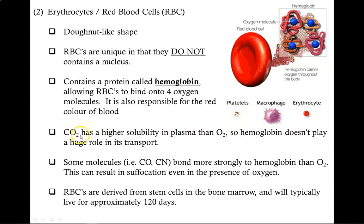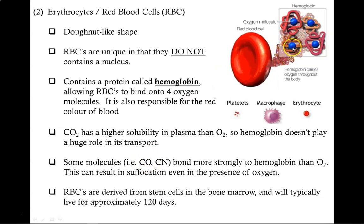It is these iron atoms in the hemoglobin that give blood its red color. Because oxygen doesn't dissolve very well in blood plasma, it requires hemoglobin in order to be transported around the body. Carbon dioxide, however, is a lot more soluble in blood plasma, so hemoglobin is not required to carry the CO2. Some molecules like carbon monoxide and cyanide bond more strongly to the hemoglobin than oxygen, and that's why these substances are poisonous to us. Carbon monoxide poisoning occurs when it bonds onto the hemoglobin, preventing oxygen from latching on instead, and without oxygen, we suffocate.